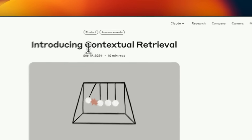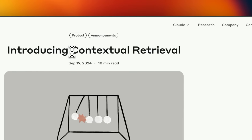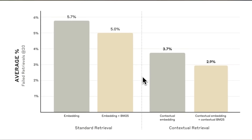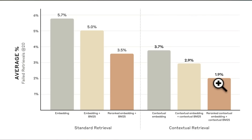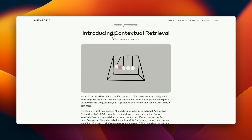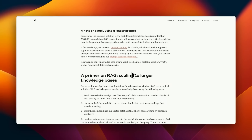Anthropic just released a new retrieval mechanism called contextual retrieval. Based on the results, it's the best performing technique to date. When combined with re-ranking, it gives you state-of-the-art performance. I'll call it more of a chunking strategy than a new RAG technique, but the results are impressive.